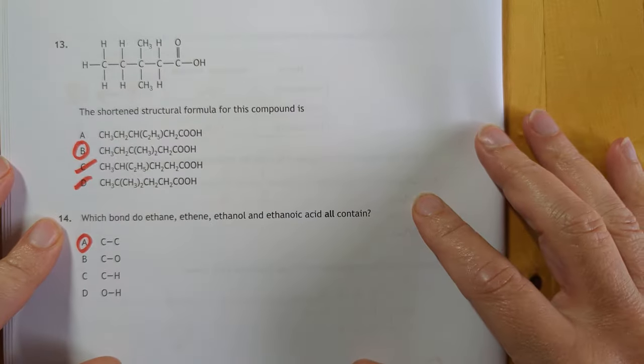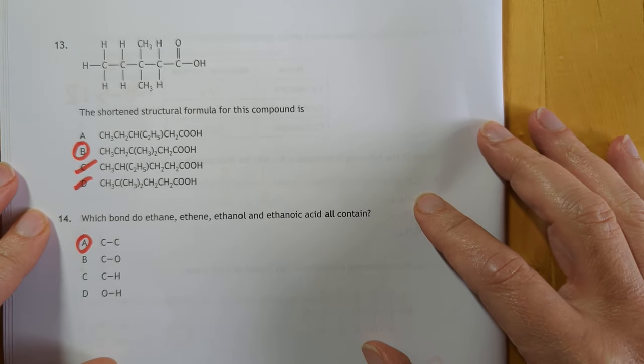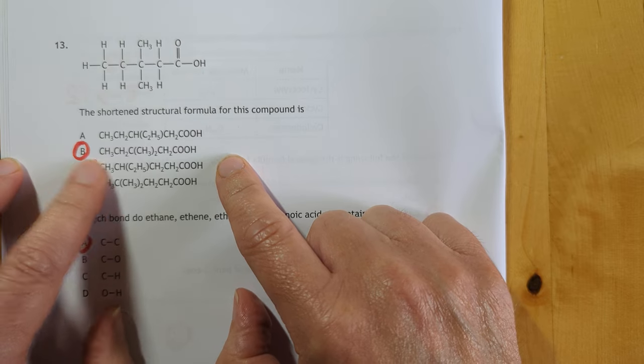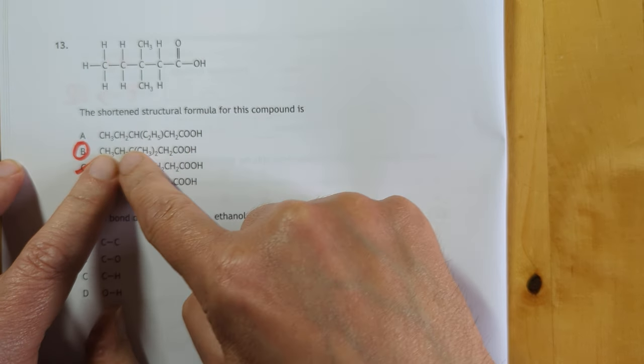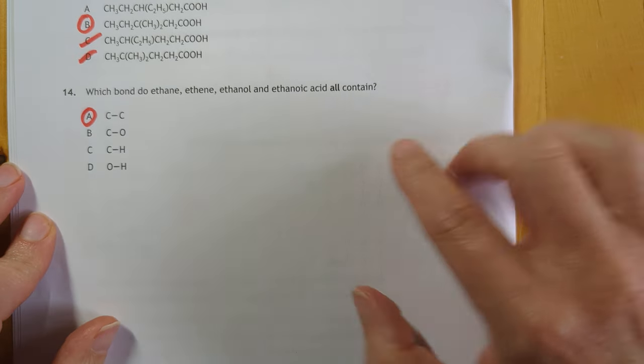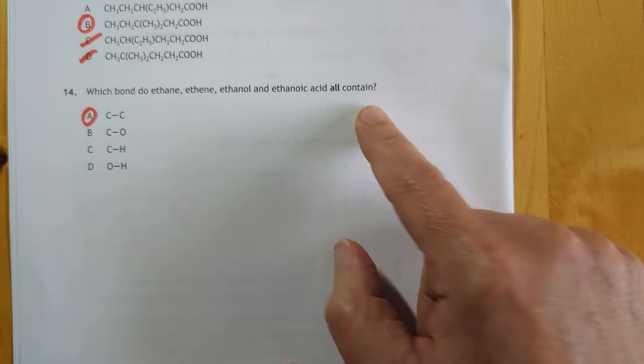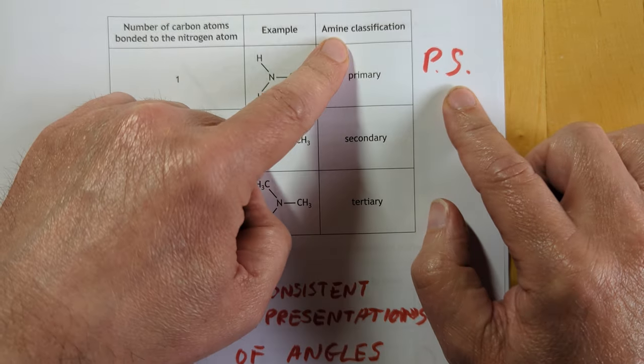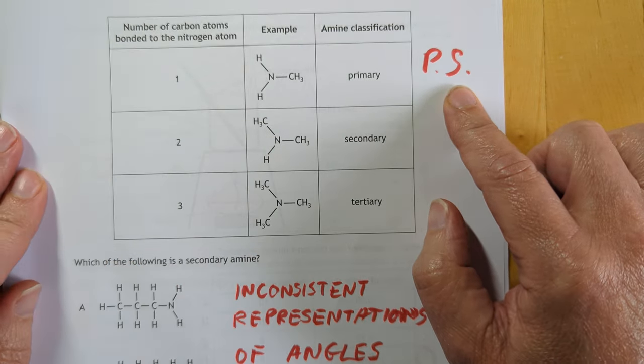Number 13. The short and structural form of this compound is this. Just track along. That's a CH3, and then a CH2, and then two branches onto here. Boom. That's your answer. Number 14. What bond do these have in common? CC bond. Number 15. Problem solving. We've never heard of amines. We've never heard of classification of them.